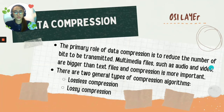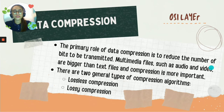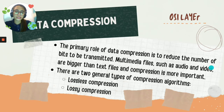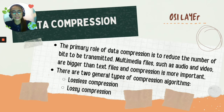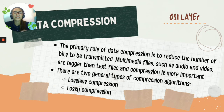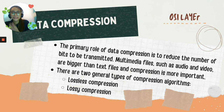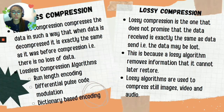For the next function, we have data compression. The primary role of data compression is to reduce the number of bits to be transmitted. Multimedia files such as audio and video are bigger than text files, and compression is more important for them. There are two general types of compression algorithms: lossless compression and lossy compression. Files transfer faster when their size is smaller — that is the purpose of data compression in the presentation layer.